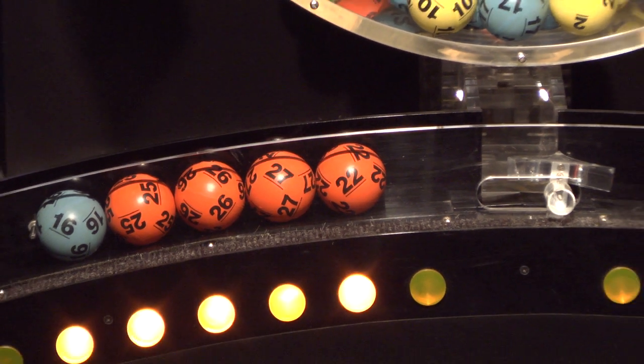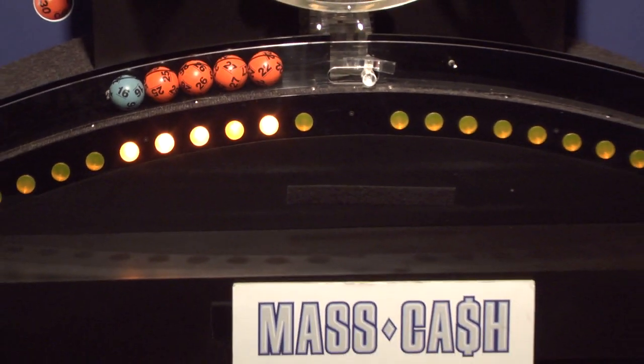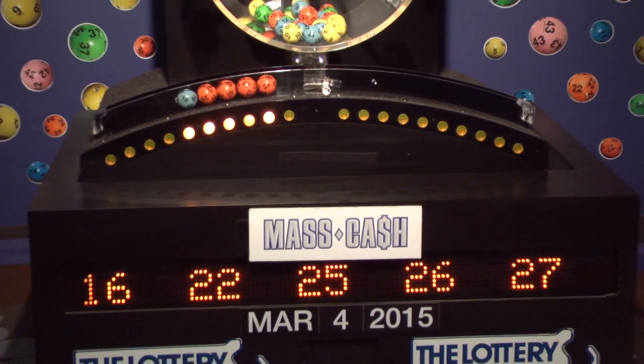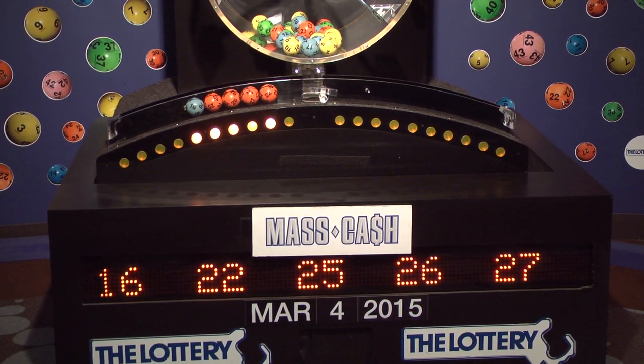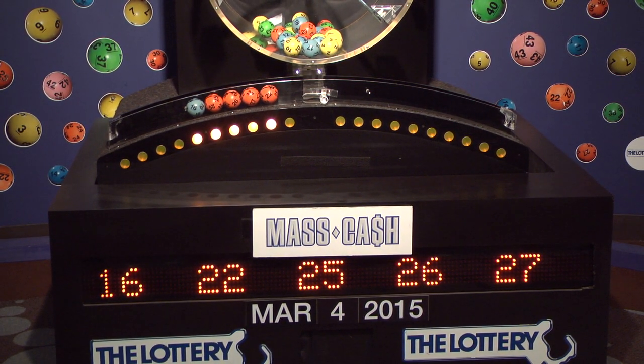Once again the winning MassCash numbers for Wednesday, March 4th are 16, 22, 25, 26 and 27. We'll see you shortly for the Megabucks Doubler and Powerball Drawings.